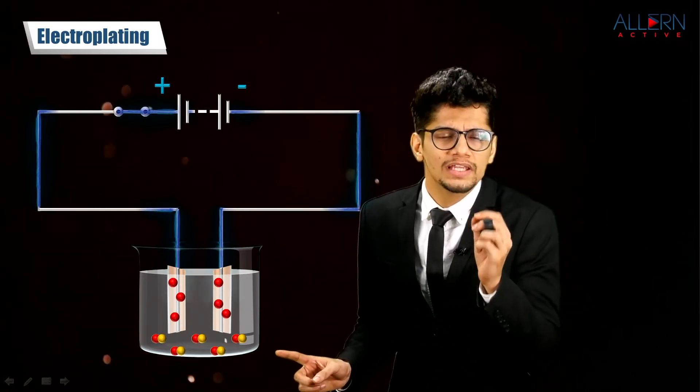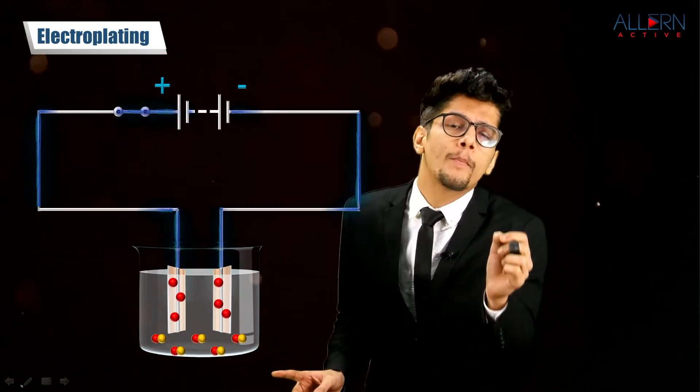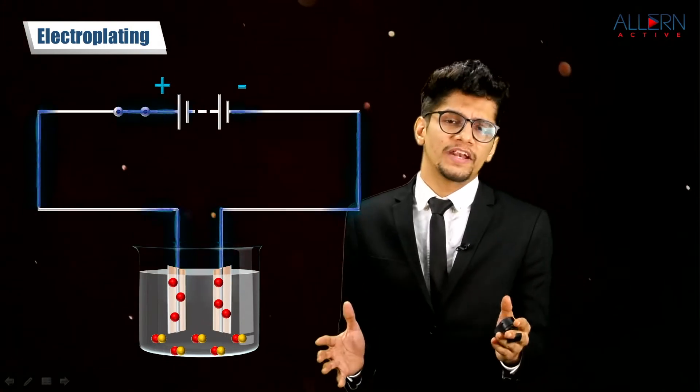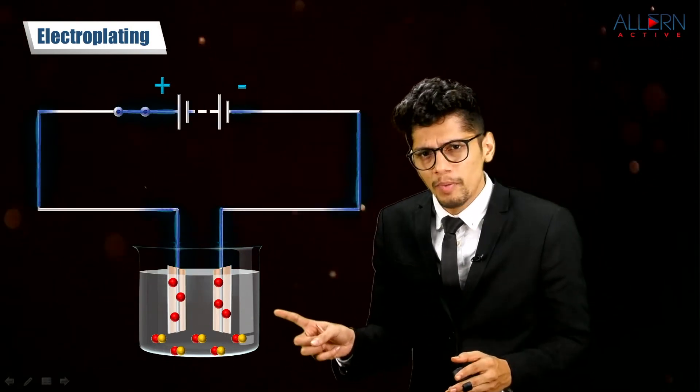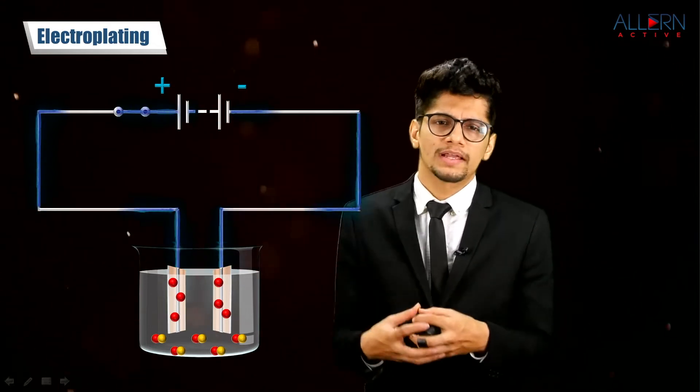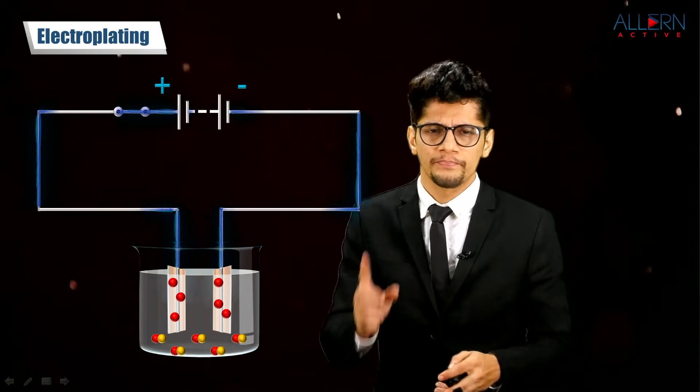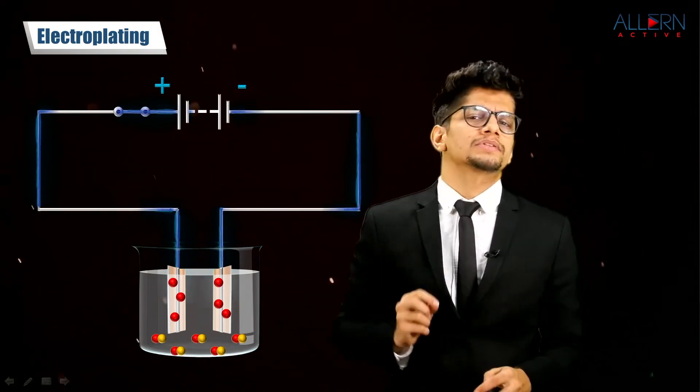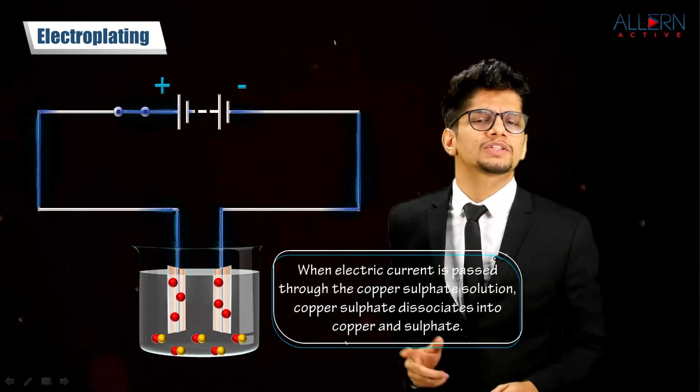The red particles you see we have considered to be copper particles and yellow are sulfate particles. On the copper plate you can see we have only copper, and the solution is copper sulfate. Let's see what happens when electric current passes through it.